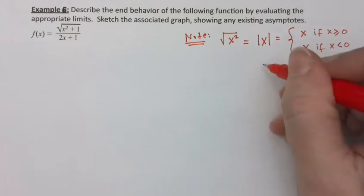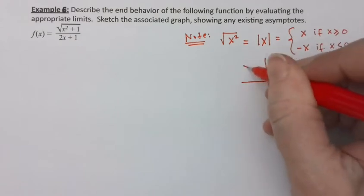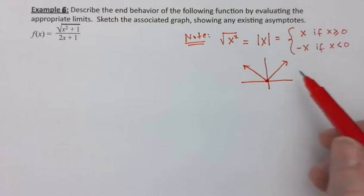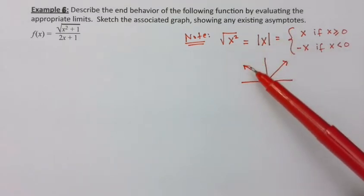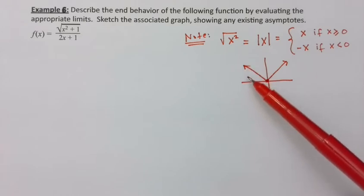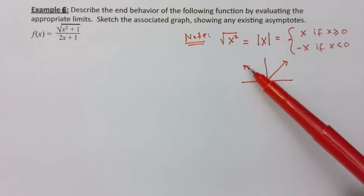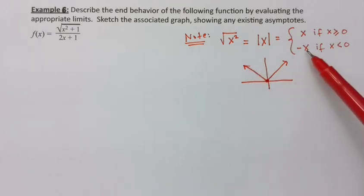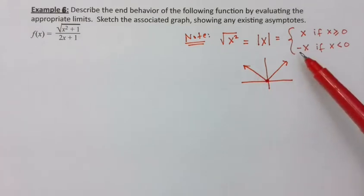Let me draw a little graph. This is what the absolute value of x looks like as a function, and the square root of x squared is the same thing. If x is negative over here, it gets squared to turn positive, then you take the square root and get negative-negative x. So negative negative 4 makes positive 4, and negative negative 2 makes positive 2.